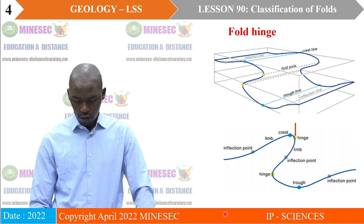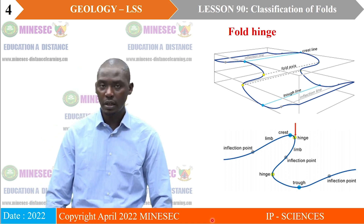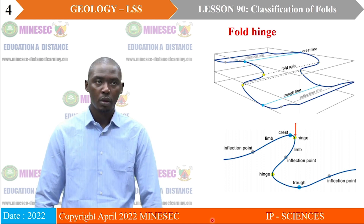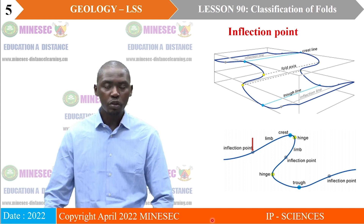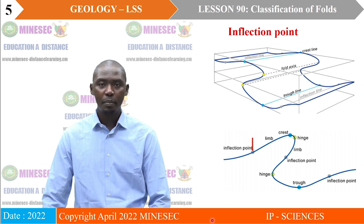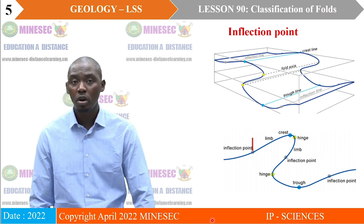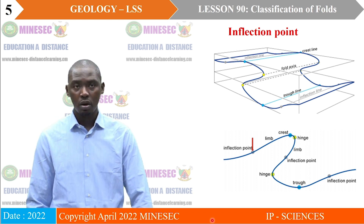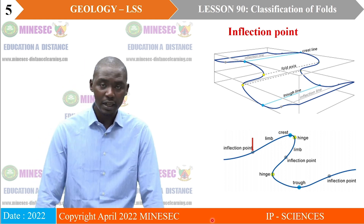We take fold hinge: by definition, it is the point of maximum curvature, or the point with the smallest radius on a fold profile. The next element of fold is the inflection point — the point on a profile where concavity changes, or where an anticline passes to a syncline or vice versa. It can also be looked upon as a point of zero curvature. The inflection point helps us to plot tangents on the fold surface, and the intersection of such tangents gives us the inter-limb angles of the two limbs that define the fold.